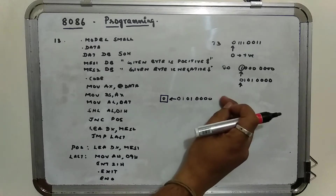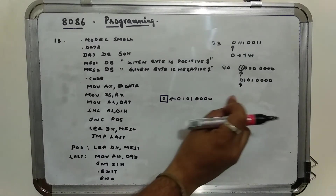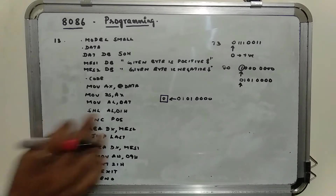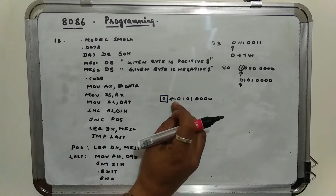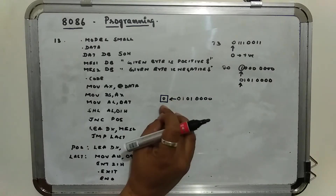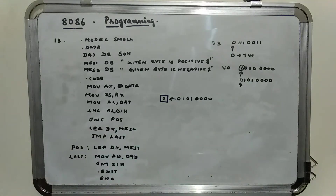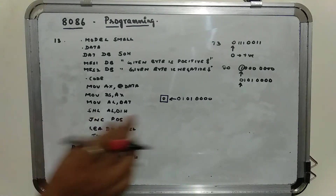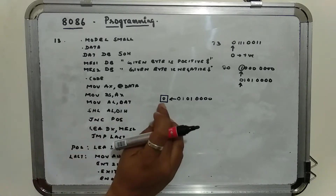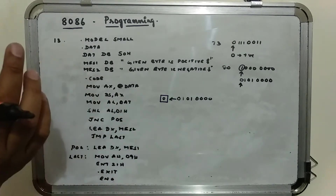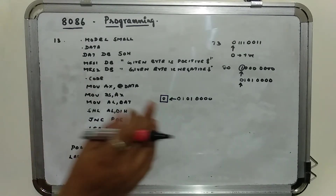To the LSB, zeros will be added. If you look into the instruction set of 8086, you will find the working of shift left or shift arithmetic left: the MSB bit is shifted to the carry flag and the LSB will be loaded with zeros. Now I am checking whether my carry flag is set — set means 1. If it is 1, the number is negative; if it is 0, the number is positive.